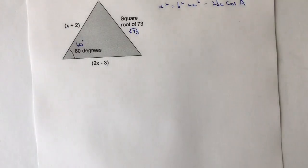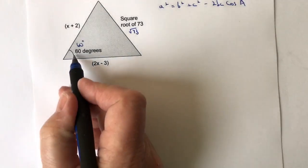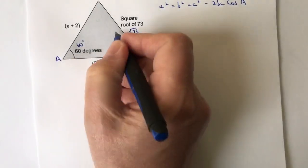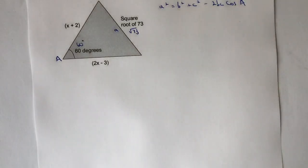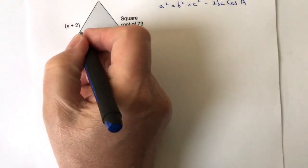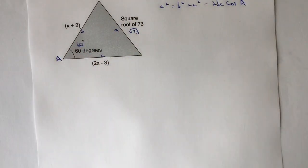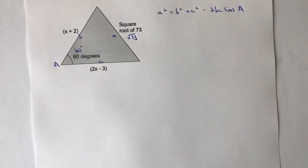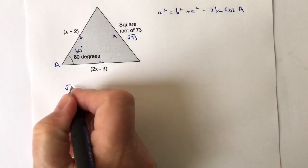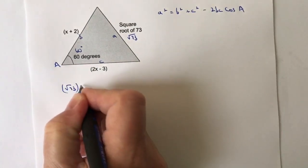So the first thing is a squared. Well this is capital A, and opposite to that is lowercase a, and that's just common convention for how we label the sides and the angles of a triangle or any shape. So this would be b and this would be c, it doesn't really matter which way round we have those. So taking the information that we've got from the formula, a squared then is going to be the root of 73 squared.